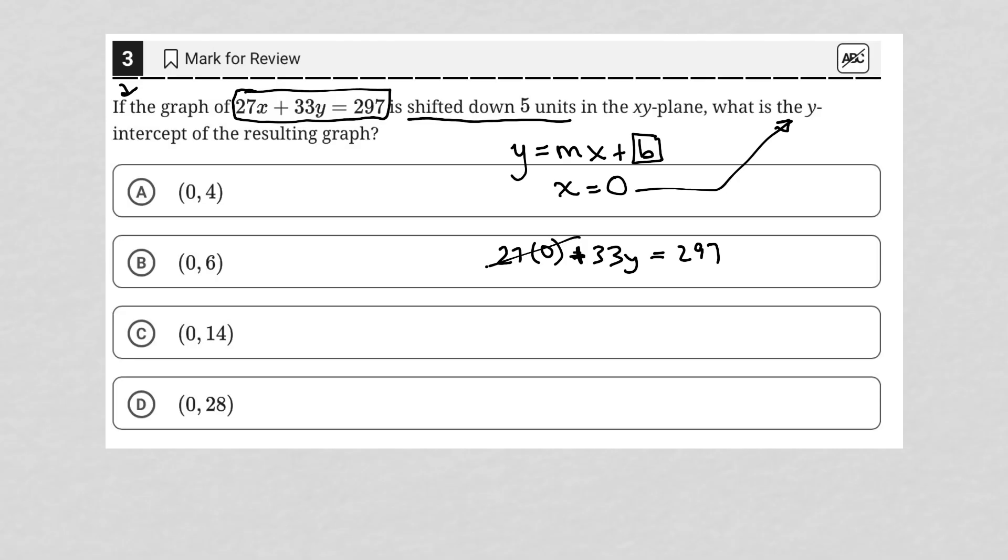This, of course, becomes zero. I can now divide both sides of this equation by 33. 297 divided by 33 in my calculator is equal to 9, so y equals 9.